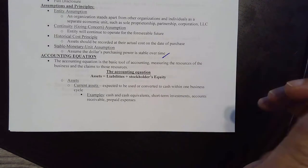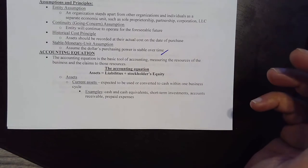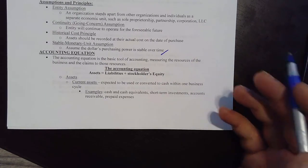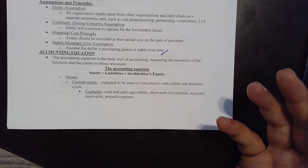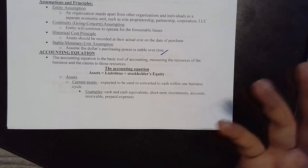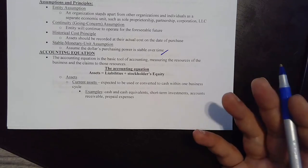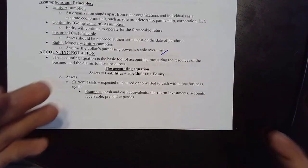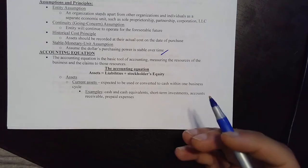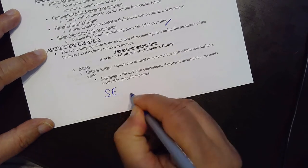We are going to start with the second part of the lecture. In this part we are going to discuss the accounting equation. The accounting equation is: assets equals liabilities plus stockholders' equity. Assets are something that a business owns, liabilities are something a business owes to other people, and stockholders' equity is simply assets minus liabilities.